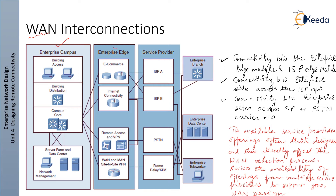This diagram shows WAN interconnections, including the enterprise campus, enterprise edge, service provider, multi-layer switches, servers, enterprise teleworker, and PSTN network. The enterprise edge consists of an e-commerce module and an internet connectivity module — these are the public modules directly supported by the internet service provider. This figure illustrates the three ways that technology connects the enterprise edge module with the outside world.